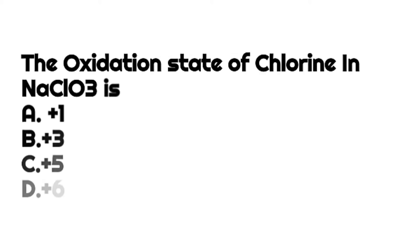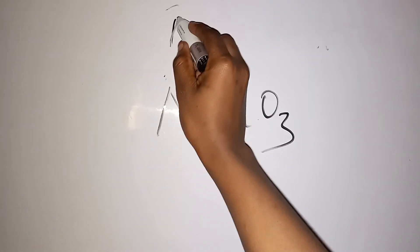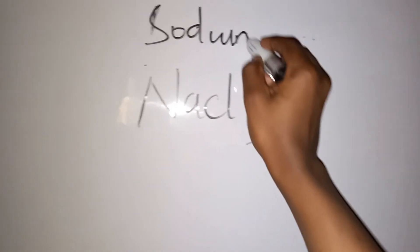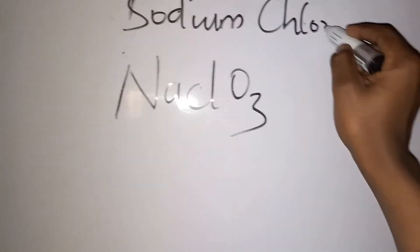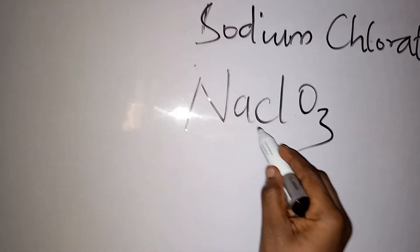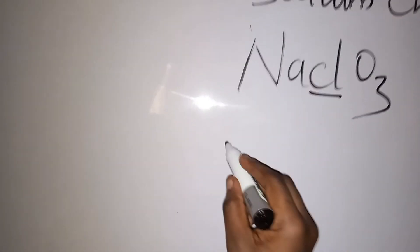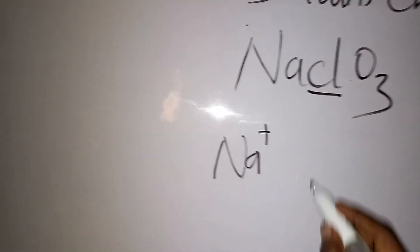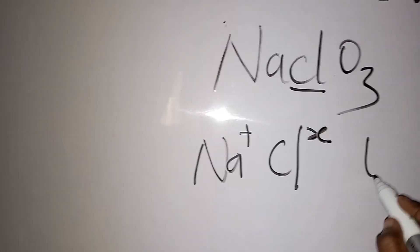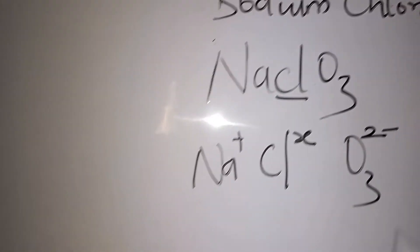The oxidation state of chlorine in sodium chlorate — options are a) +1, b) +3, c) +5, and d) +6. We are looking for the oxidation state of chlorine in sodium chlorate (NaClO₃). The oxidation state for sodium is +1, for oxygen is −2, and for chlorine we don't know.